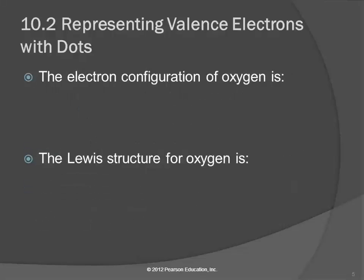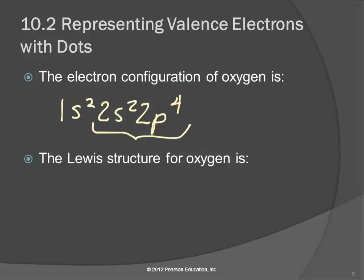So let's look at the electron configuration for oxygen. To find oxygen on the periodic table, we see that it's in period 2, and it's over in the P block, 4 into the P block. So it's going to end with 2P4. It's going to start out 1S2, 2S2, 2P4. So how many valence electrons does oxygen have? Six. We can see that from the electron configuration — n equals 2 is the highest principal quantum number. There's 2 in the 2S and 4 in the 2P, and that adds up to 6.